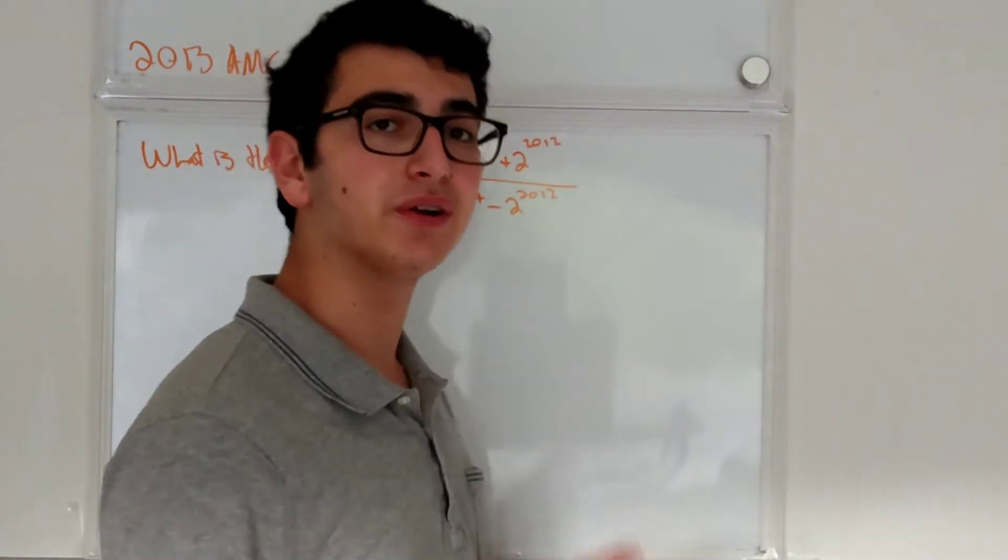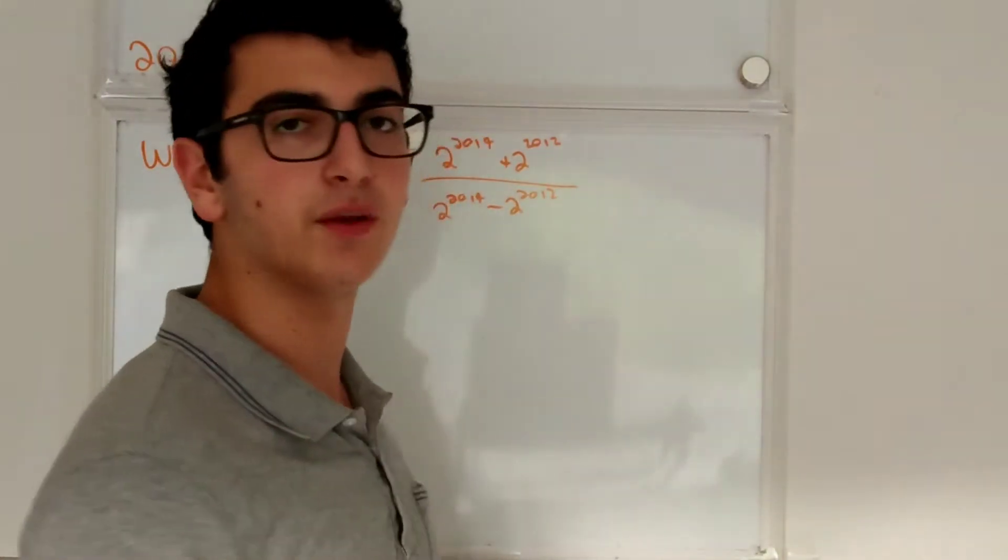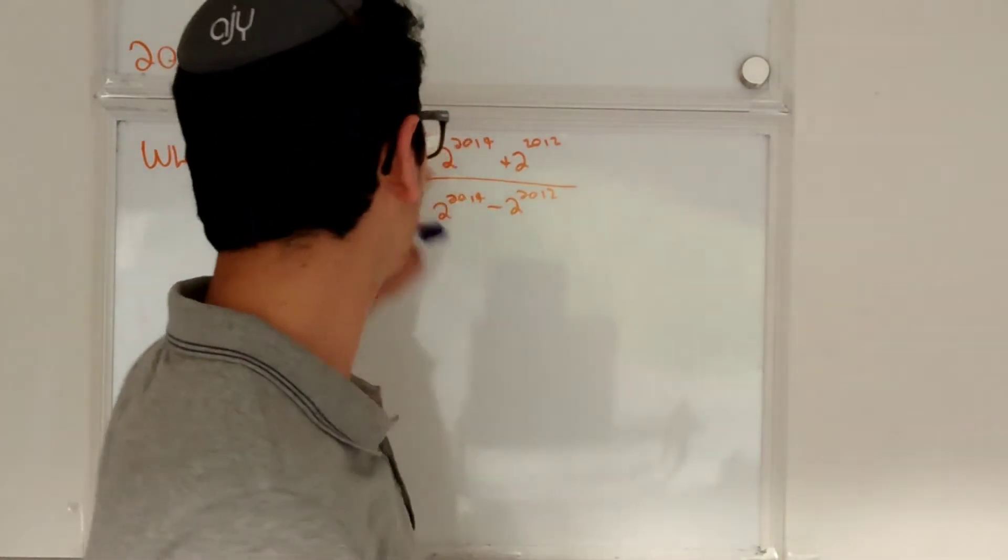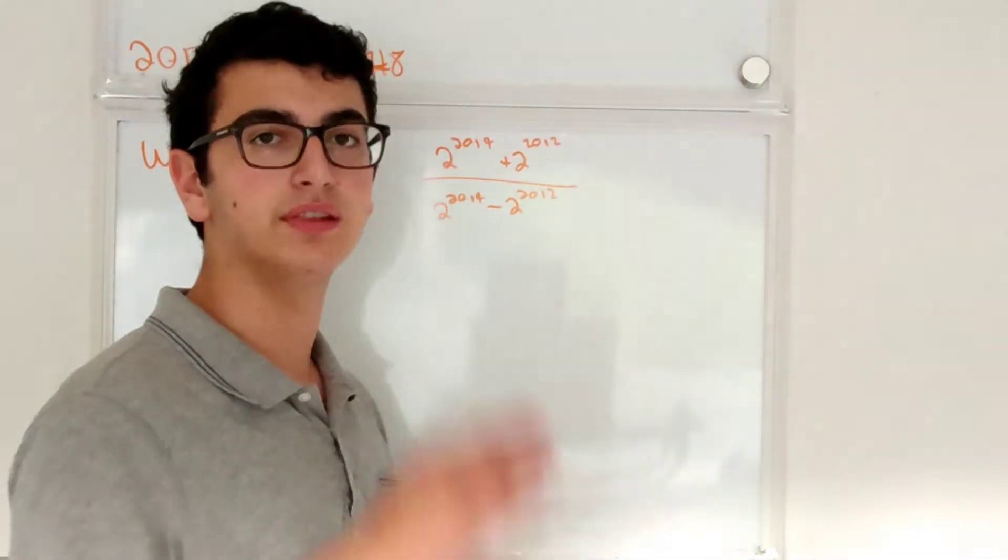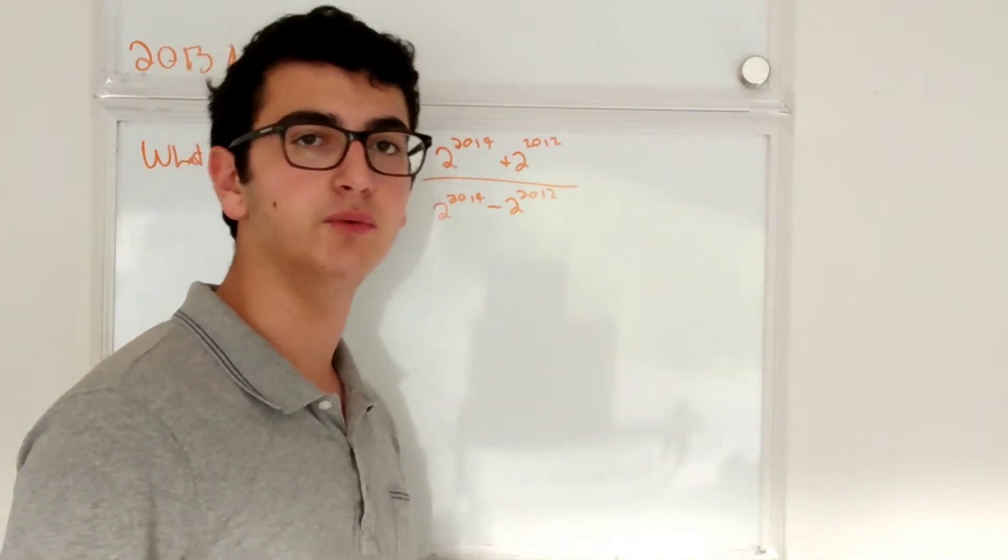So what you're going to have to do is you're going to have to create some sort of like term between both of these, between the denominator and the numerator.